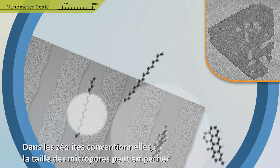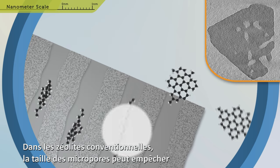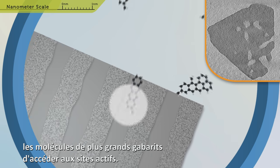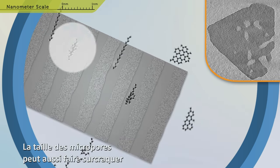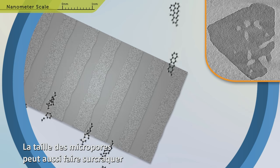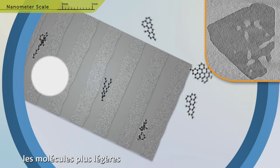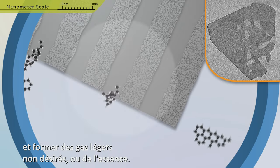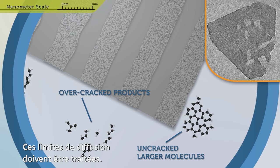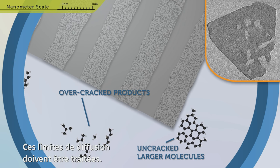In conventional zeolites, the size of the micropores can prevent the larger feed molecules from accessing the active sites. At the same time, the size of the micropores can lead to over-cracking of the lighter molecules, forming undesired light gases or gasoline. These diffusion limitations must be addressed.